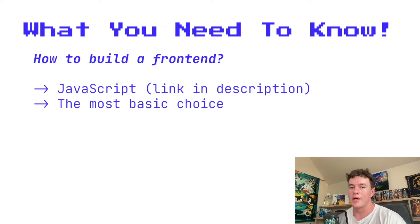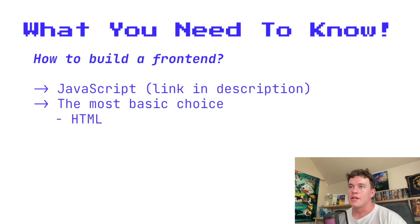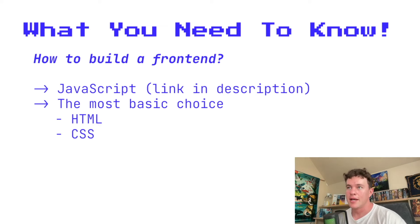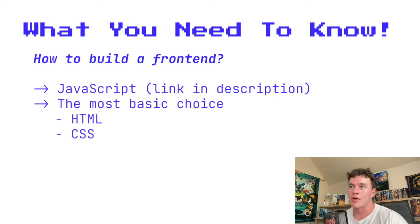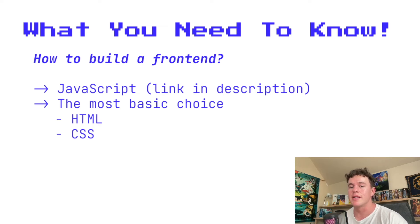JavaScript isn't the only thing you need for a front end — it's combined with two other things to create a package known as vanilla web development, which is the most basic and incredibly popular way to develop front ends. The two other choices are HTML (HyperText Markup Language), a markup language for creating website content, and CSS, a styling language that makes that content look beautiful. Combined with JavaScript, these make pages interactive and dynamic.